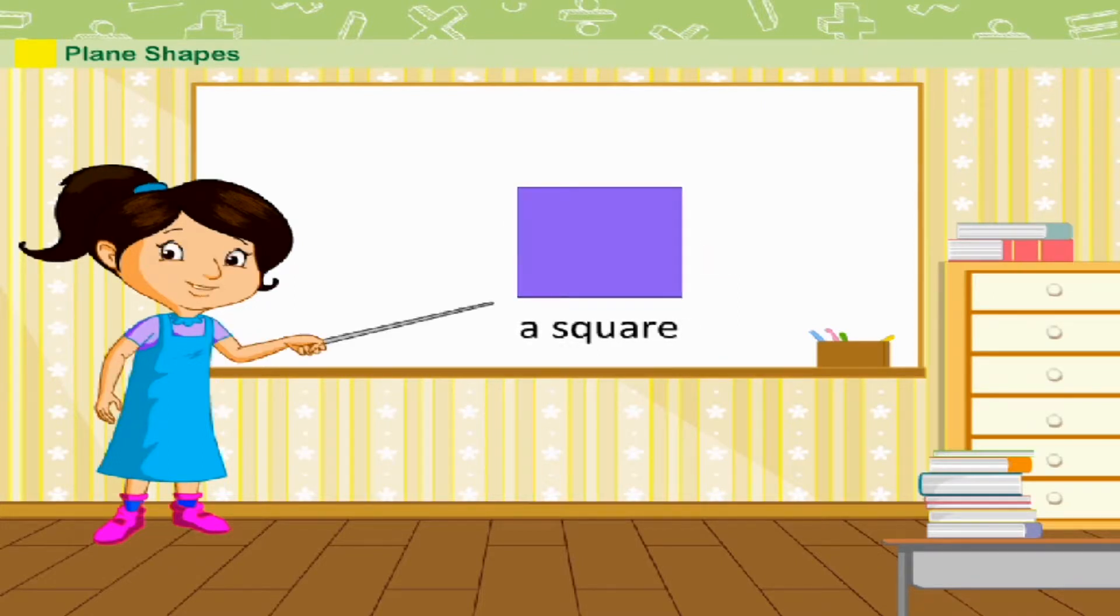This is a square. A square has four corners or vertices and four sides. All the four sides are equal.